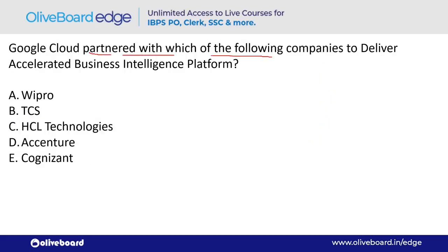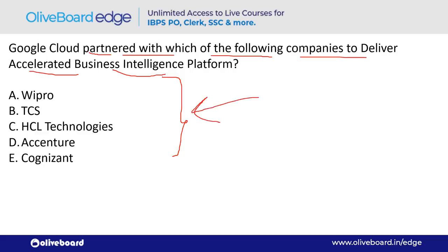Google Cloud partnered with which company to deliver an accelerated business intelligence platform? The answer is HCL Technologies — option C, a private company.